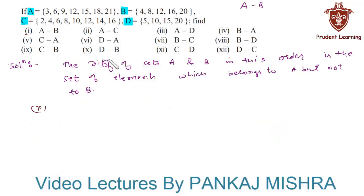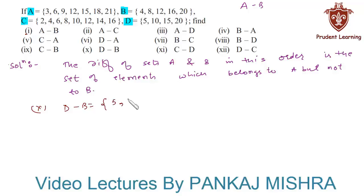Next we have D minus B. This is equal to the set of all elements that are in set D but not in set B. Here we can see that 5, 10 and 15 are present only in set D and not in set B.